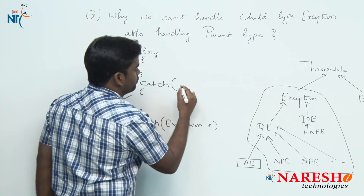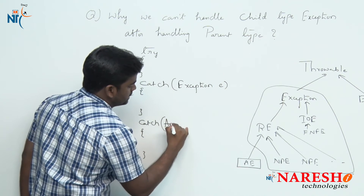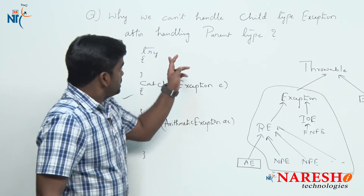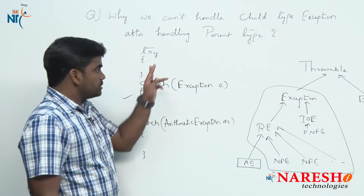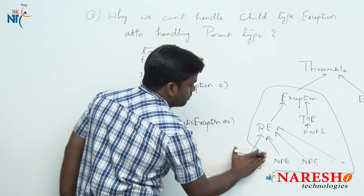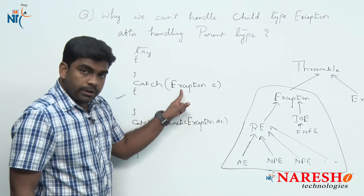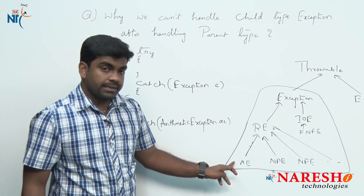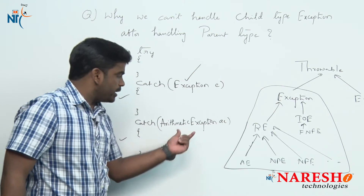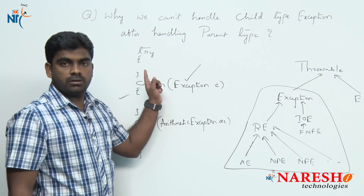Now consider the reverse: if you handle the supertype Exception first and then ArithmeticException second. When the compiler sees the first catch with Exception, it binds that to all subclasses of Exception — which includes ArithmeticException. When the compiler then sees the second catch for ArithmeticException, it says you are already handling it in the first catch. You cannot handle the same exception more than once — that is an impossible case.